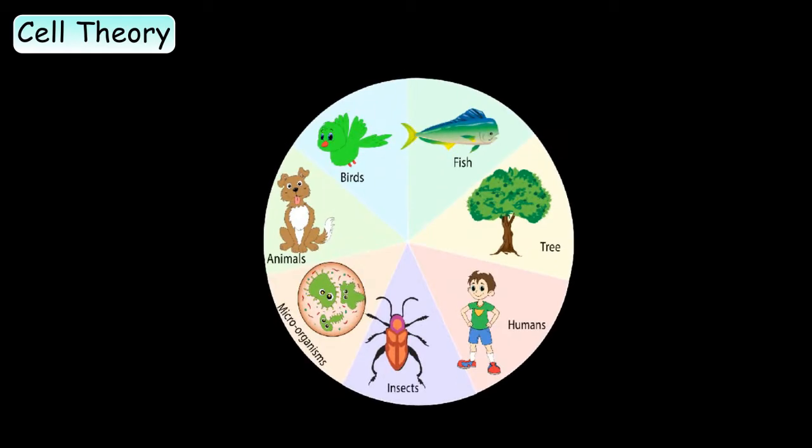In our last lesson, we learned the commonalities of living things. And one major thing was that all living things are made up of at least one cell.